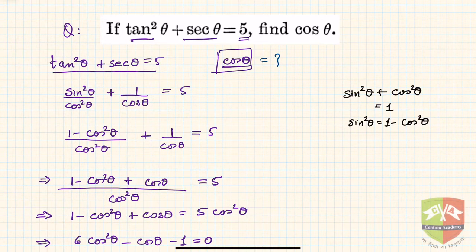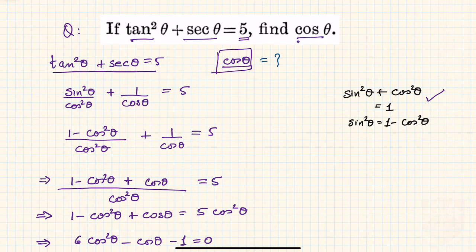The relation is given between tanθ and secθ, and we need to find cosθ. We'll use trigonometric identities to solve this. Since cosθ is to be found, we will reduce everything like tan and secant in terms of cos. Let's see how it's done.